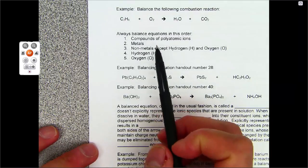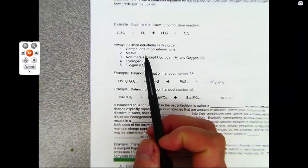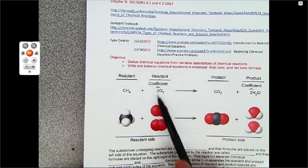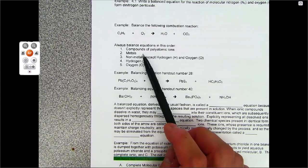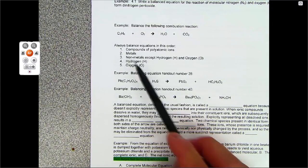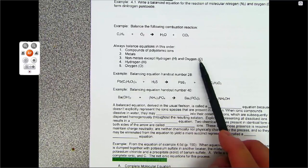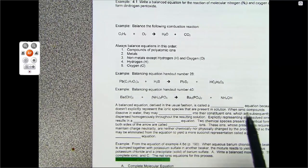Now, here is the order that we should balance equations. Now, again, balancing equations is just getting these coefficients. So we're going to do compounds with polyatomic ions first, then you want to do metals, then nonmetals except hydrogen and oxygen, then hydrogen and oxygen last.